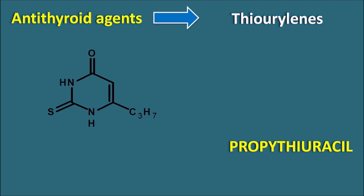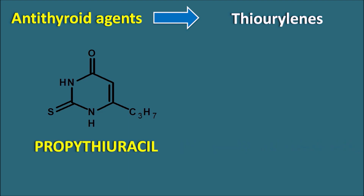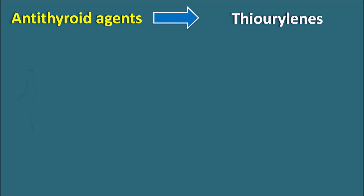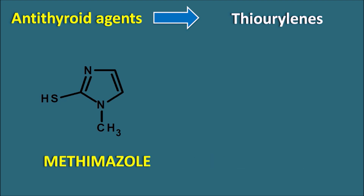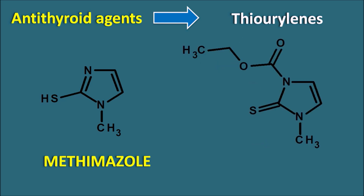The first drug is propylthiouracil, which has the uracil structure with a propyl side chain at the sixth position — it is 6-propyl-2-thiouracil. The second is methimazole, which has an imidazole nucleus with a thiol group at the second position — it is 1-methyl-2-thioimidazole. The third is carbimazole, which has a similar structure to methimazole but with an ethyl carboxylate ester on one of the nitrogens. These are the three drugs used as antithyroid agents.